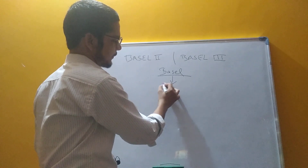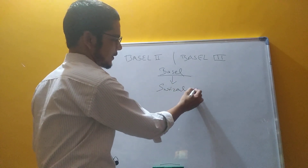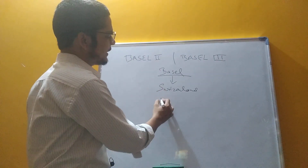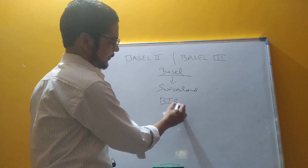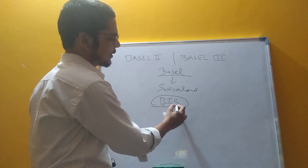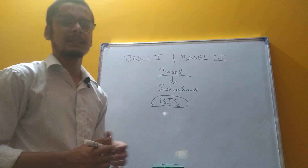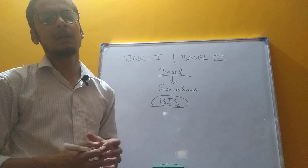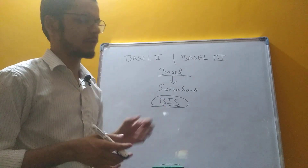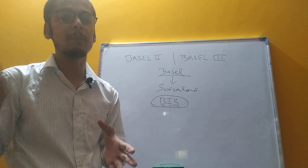Before comparing Basel 2 with Basel 3, let's first compare with Basel 1. BIS stands for Bank for International Settlement. This bank is an organization whose members are the central banks of ESCO member countries.